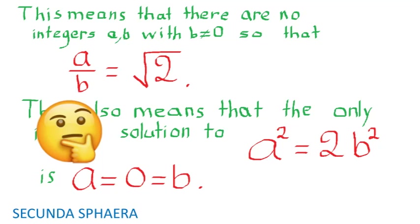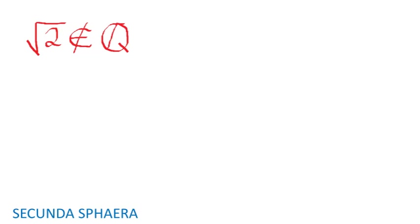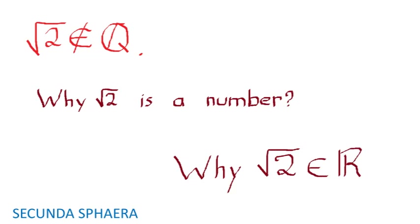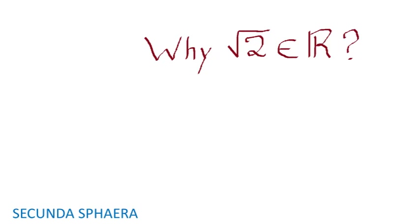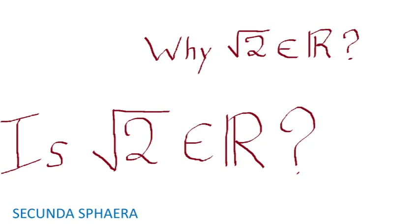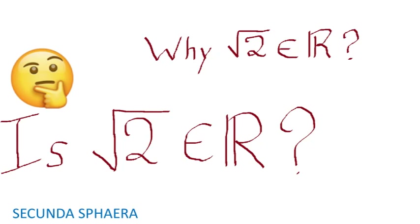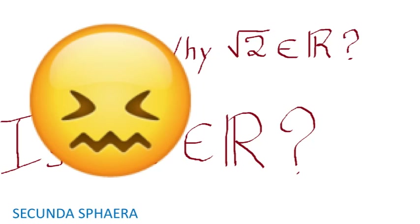The proof of that result is short and is sometimes used to introduce the concept of proof by contradiction. However, another question is left lingering in most courses, which is the question that will be addressed here: Is the square root of 2 a number? To be more specific, the question can be shifted to: Is the square root of 2 a real number? This is a good moment for you to ponder about this question and reflect about your answer and how it relates to your acquired knowledge through life and through college.